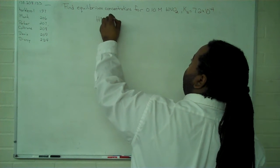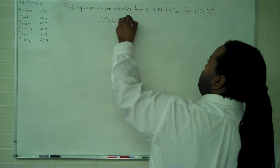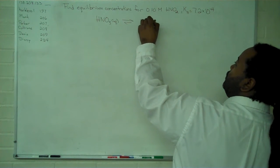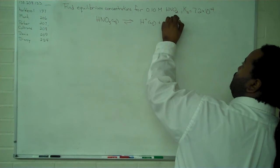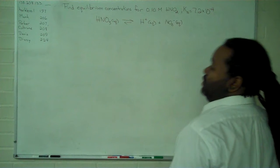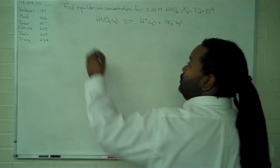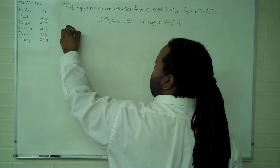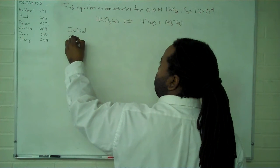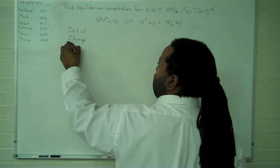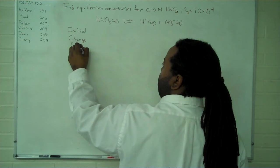So we have a dissociation, and once we have this written out, the next step is to write out what's called the ICE table. So we have the initial, the change, and then the quantities at equilibrium.